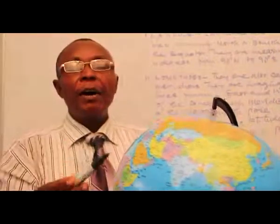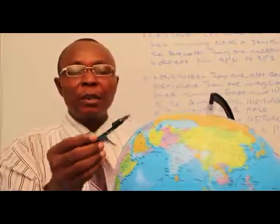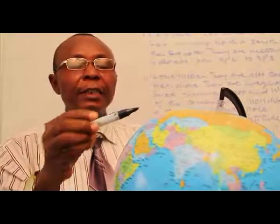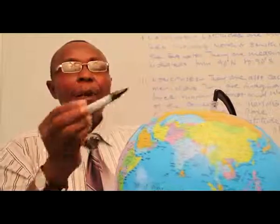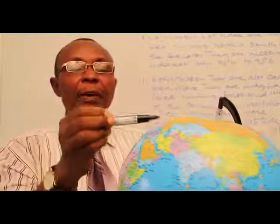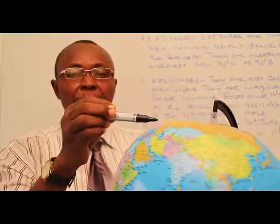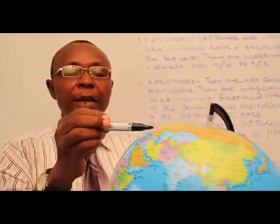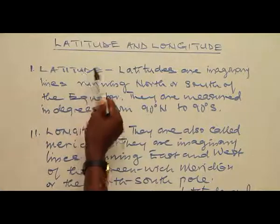We shall now describe how they are measured and how to calculate the distance between one point and another on the surface of the earth. Each of the latitudes intersects with the longitudes, and any point where the latitude and the longitude intersect describes a particular or specific place on the earth's surface. So the intersection of latitudes and longitudes describes a place on the earth's surface.